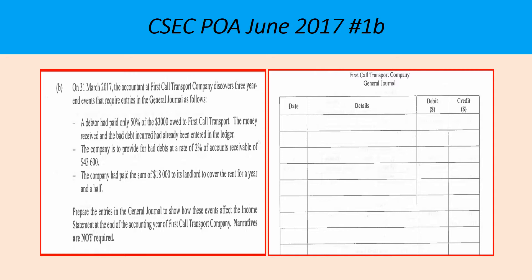First item: A debtor had paid only fifty percent of the three thousand dollars owed to First Call Transport. The money received and the bad debt incurred had already been entered in the ledger.